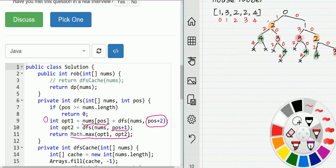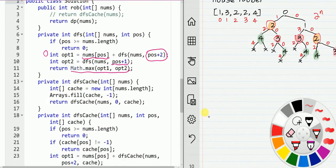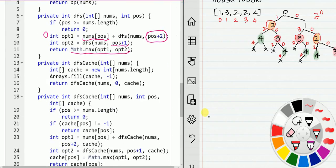...we can find that we are repeatedly doing computation for the same subproblem, here and here. So we can use memoization to reduce time complexity. This time complexity would be 2 to the n. So we use memoization. This is a DFS cache version. We have an array...